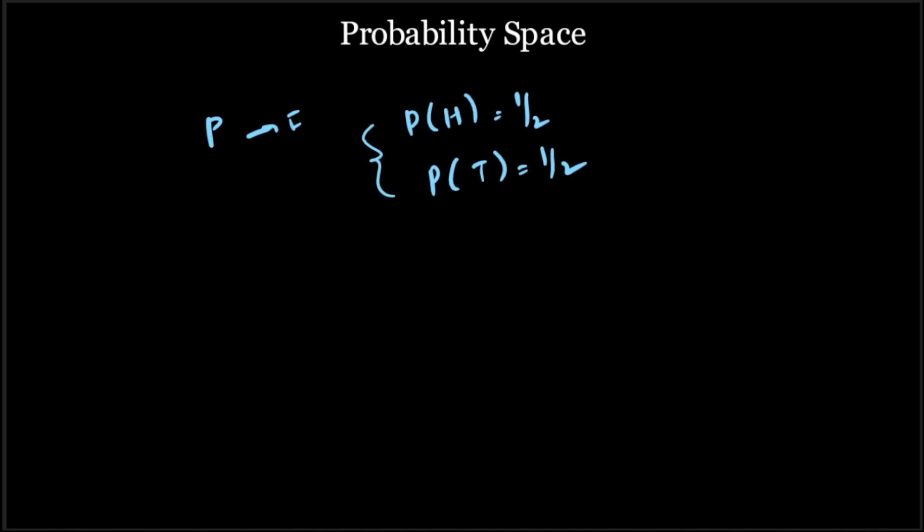Hope this gives you some intuitive understanding of what probability space is and its different characteristics — that is the possible outcomes, the sigma algebra, and the probability measure. Thank you.